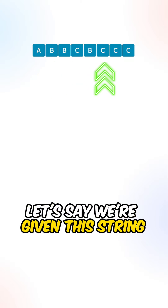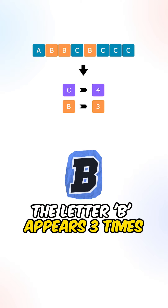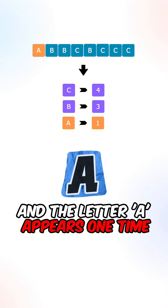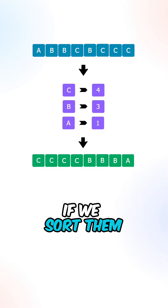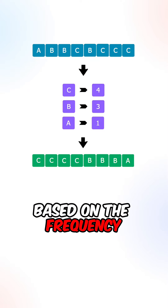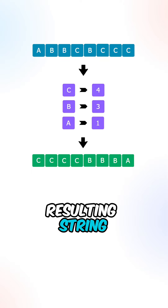Let's say we're given this string: the letter C appears four times, the letter B appears three times, and the letter A appears one time. If we sort them in descending order based on the frequency, we get the following resulting string.